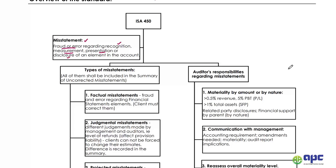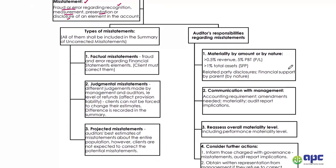There are three types of misstatement. The first is factual misstatement, meaning the figures are simply wrong due to fraud or error in the financial statements. The client must correct these, otherwise we will modify the audit report.